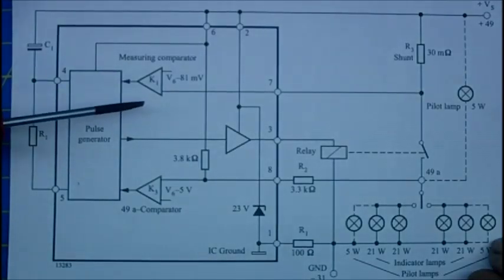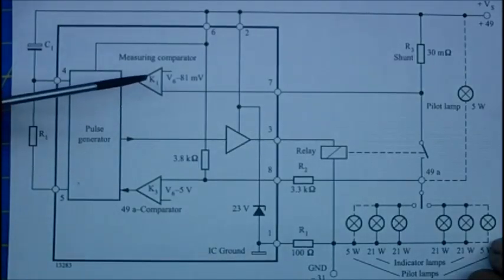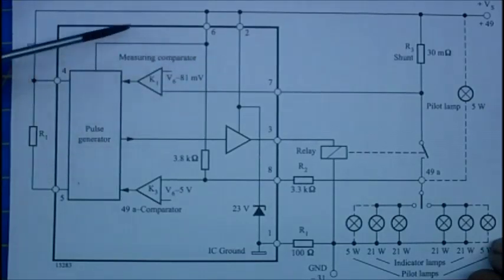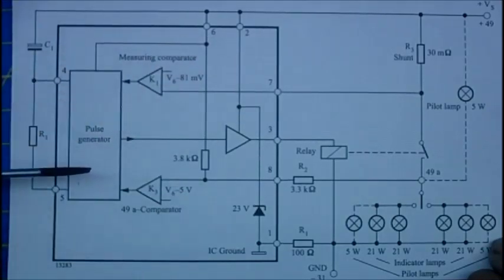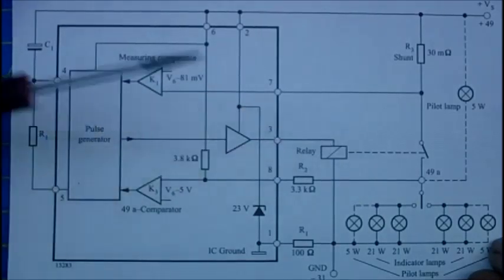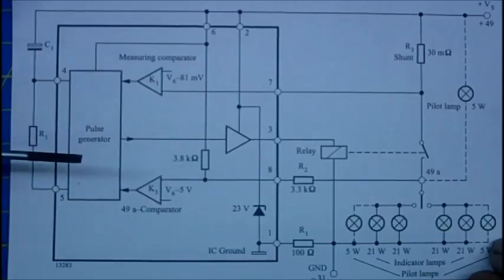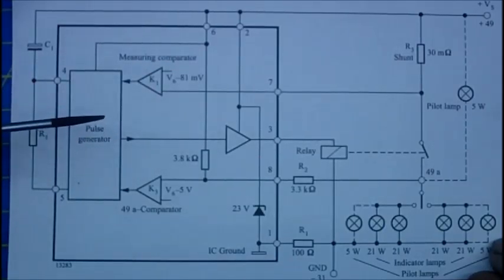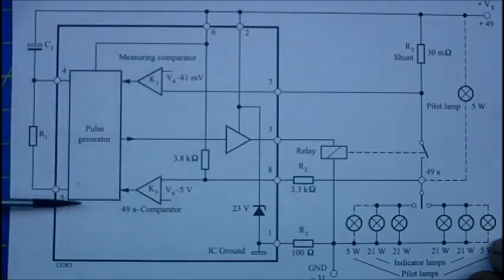The reason why it has to know is because if a bulb fails, only half the amount of current will flow, but the chip needs to let the driver know that one of the bulbs is gone. The chip is looking for information from the circuit as to whether both bulbs are working or not. If the chip senses that one of the bulbs has failed, it will double its flash rate. In other words, the driver of the vehicle will get to know that there's something wrong with the circuit, probably a bulb gone.